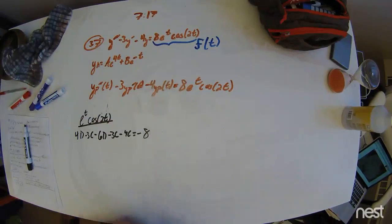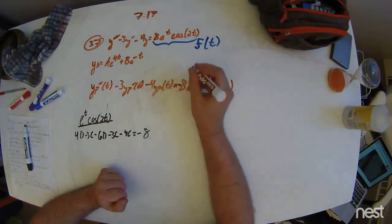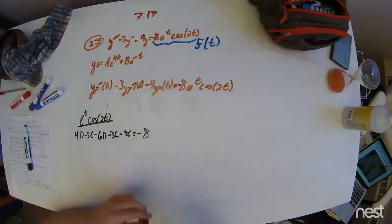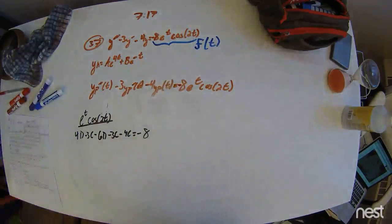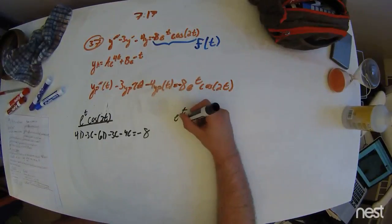Oh, I also forgot a negative up here for the initial problem statement. My bad. And our expression for e to the t sine of 2t.